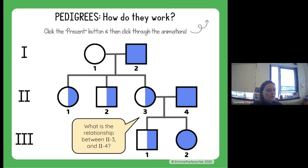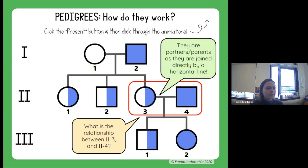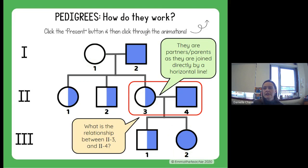Now think about the relationship between generation two, individual three and four. They're married or they're partners, joined by a horizontal line. They're not always married — they could be partners or parents — but it indicates they're together and would be having children.